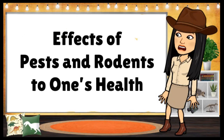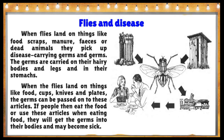Let us talk about the effects of pests and rodents to our health. When flies land on things like food scraps, manure, feces, or dead animals, they pick up disease-carrying germs. The germs are carried on their hairy bodies, legs, and in their stomachs. When flies land on food, cups, knives, and plates, the germs can be passed onto these articles.